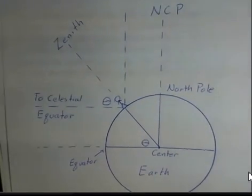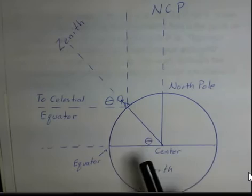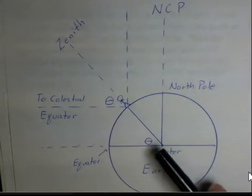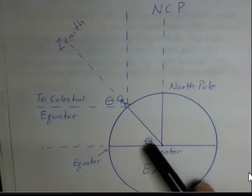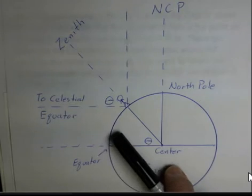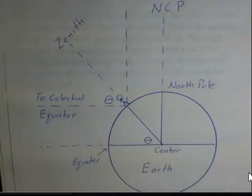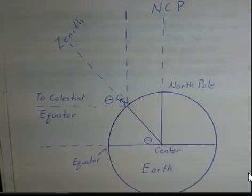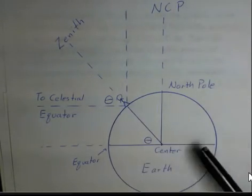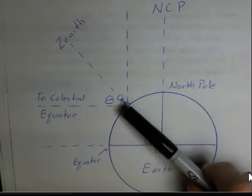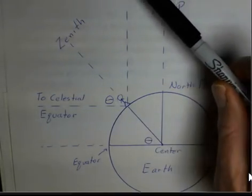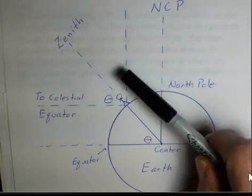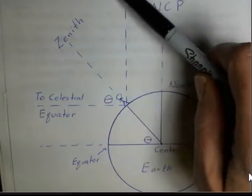So here we are on the Earth. We have the center of the Earth, we have the equator, and we have an observer here at some latitude — maybe 45 degrees. That would be the angle theta: the angle from the equator up to the observer's location along the circular Earth. The North Celestial Pole is a point on the sky — it's very, very far away — and I can draw these lines parallel to each other, and they both end at the North Celestial Pole.